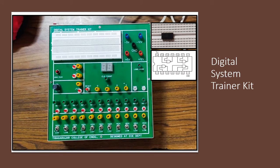In the lab we will be given a digital system trainer kit. We mount the IC on the breadboard provided on this kit. First, connect the ground terminal to pin 7 and the 5V supply to pin 14. To apply inputs, yellow pins are available — connect them to the IC and toggle logic high or logic low using the switches provided. The outputs are taken from green pins connected to LEDs; the LED will glow for a high output and will not glow for a low output.